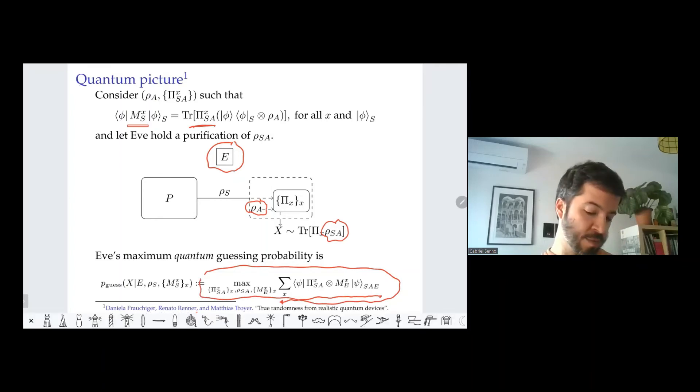Just a small comment comparing to Fawzi and et al. In their paper, the generalized Naimark dilation is fixed by the user, but in our case we are letting it be chosen by the adversary.